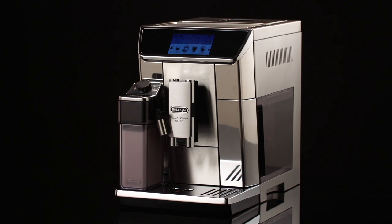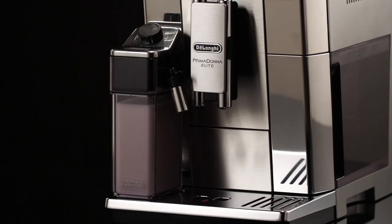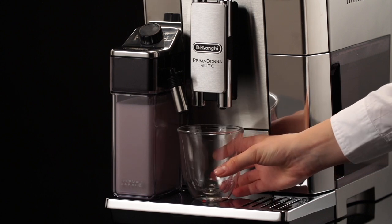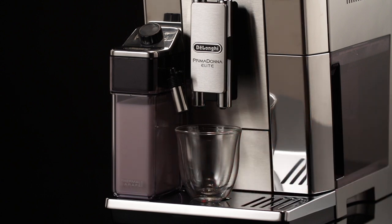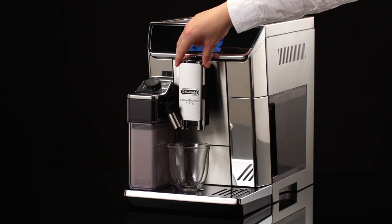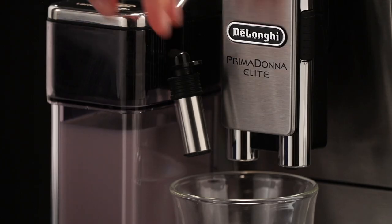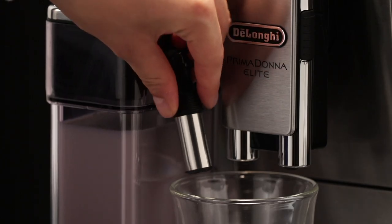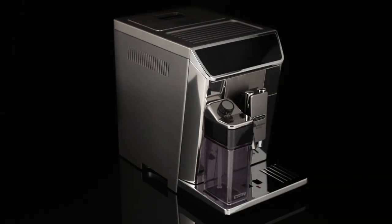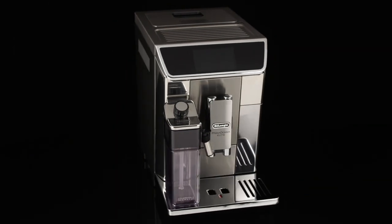Place a sufficiently large cup under the coffee spouts and frothed milk spout. Adjust the length of the milk spout. To move it nearer the cup, simply pull it downwards. Follow the instructions below for each function.